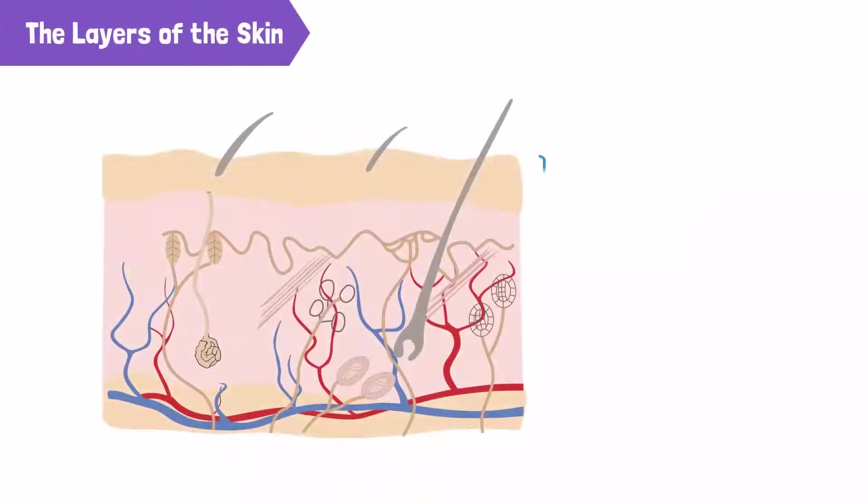The outermost layer is called the epidermis. The middle layer is called the dermis. And the deepest layer is called the hypodermis. Each layer has its own unique functions.